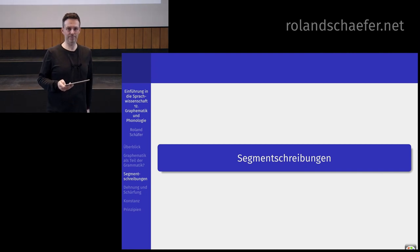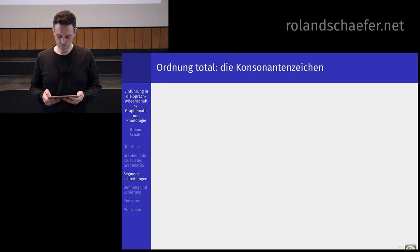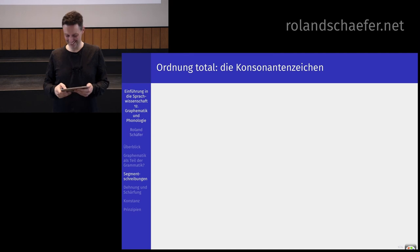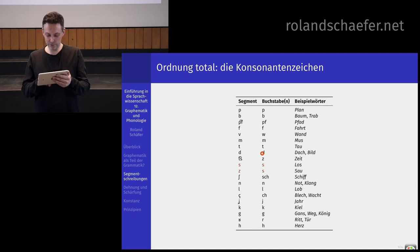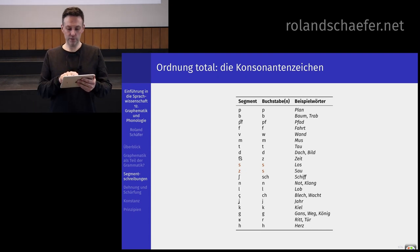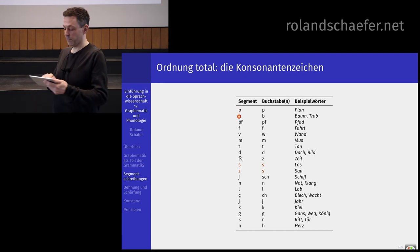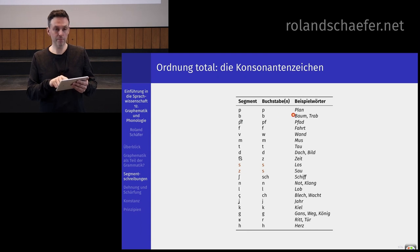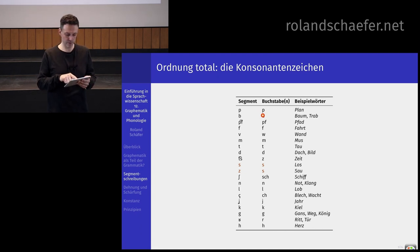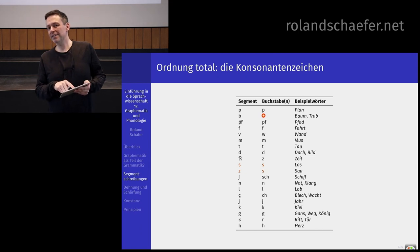Kommen wir jetzt zu den Segmentschreibungen. Da haben wir erst mal Ordnung total bei den Konsonantenzeichen, da ist alles wunderbar. Wir haben das zugrunde liegende Segment P – wie in Plan oder Klappe oder Schlapp – und das entspricht immer dem Buchstaben P. Überall, wo wir das zugrunde liegende Segment P haben, gibt es den Buchstaben P. Umgekehrt funktioniert das nicht: Sie haben zum Beispiel auch exotische Schreibungen wie PH, wie in Photosynthese, aber das ist nicht Kern.